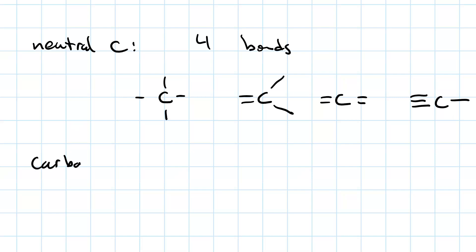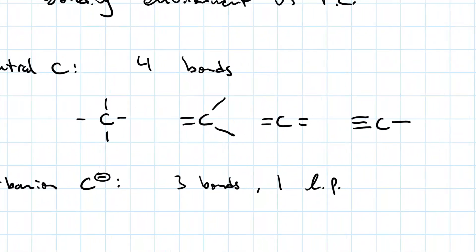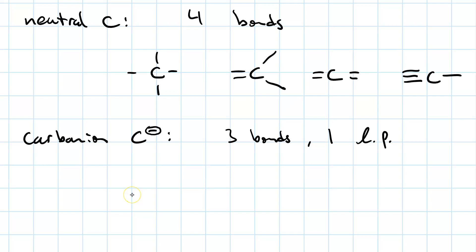Now let's look at a carbanion. A carbanion has three bonds and one lone pair. So we can do a lone pair and three single bonds, or we could do a lone pair and a single bond and a double bond, and we indicate that it's a carbanion with the negative sign. Or we could even have a triple bond to a carbon and a lone pair.